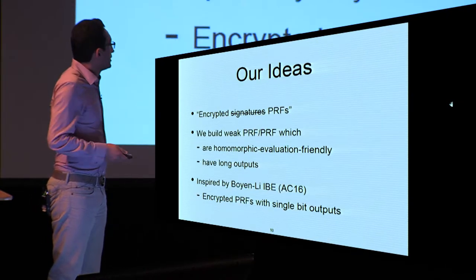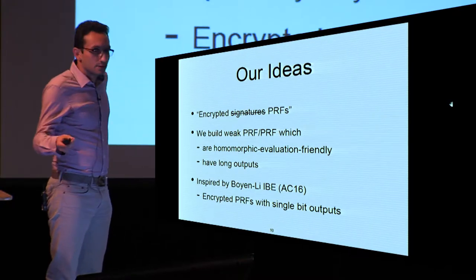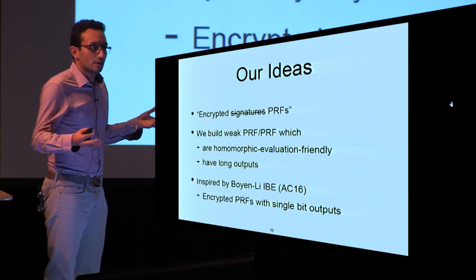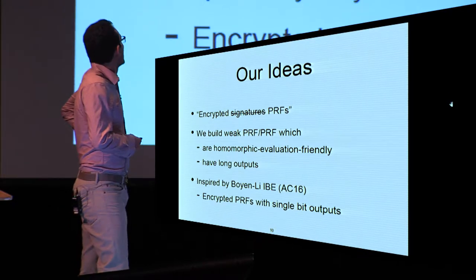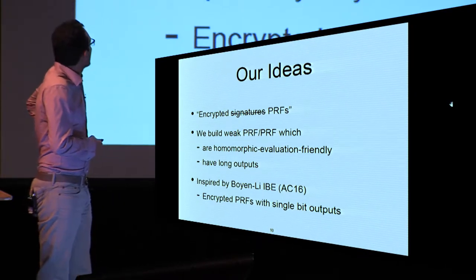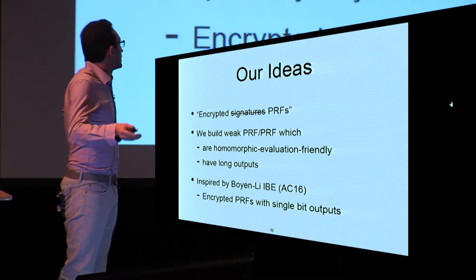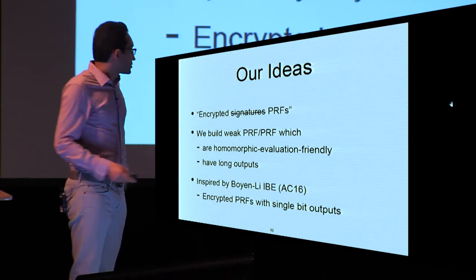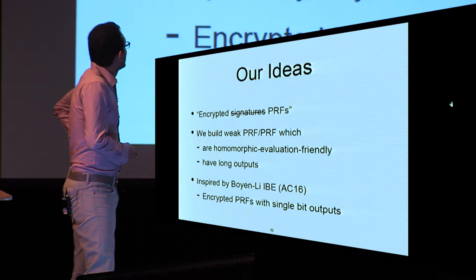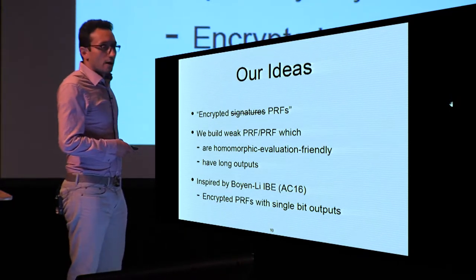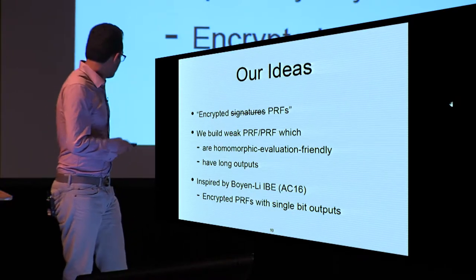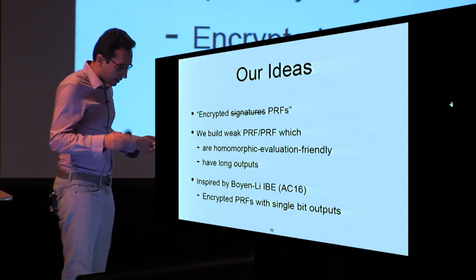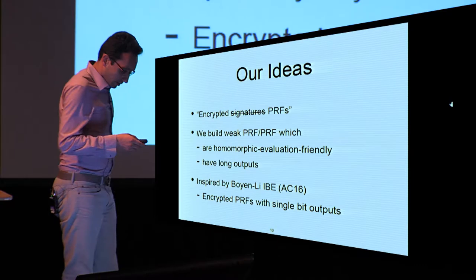The idea is to replace signatures with PRFs. In these two papers, we replace signatures with PRFs. We build weak PRFs or PRFs that are homomorphic-evaluation-friendly and have long outputs. The work of BL17 is inspired by the jointly IBE appearing in ABE, where they use encrypted PRFs with single-width outputs, in contrast to the long outputs we have.